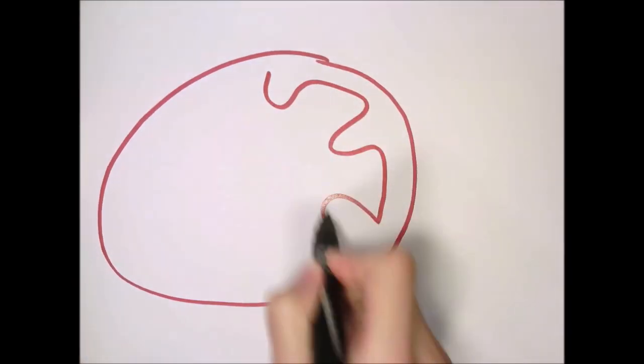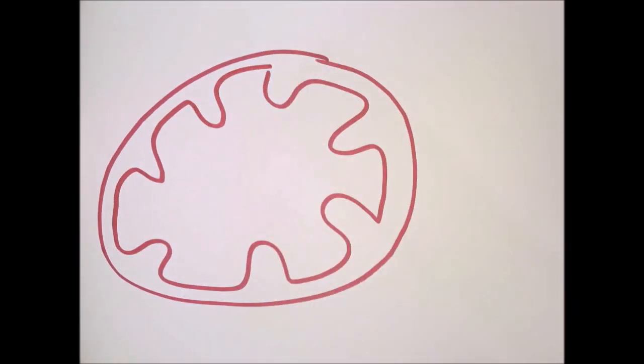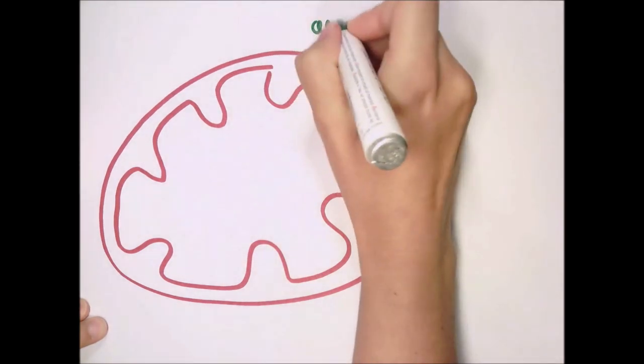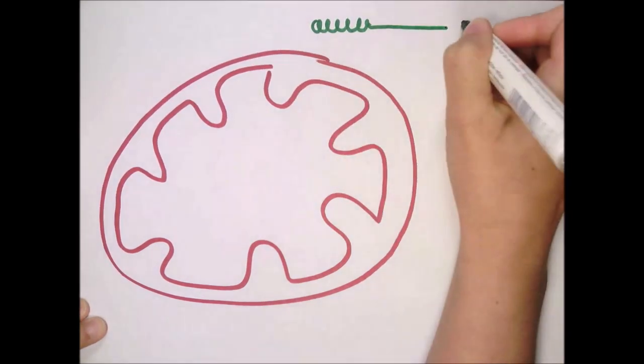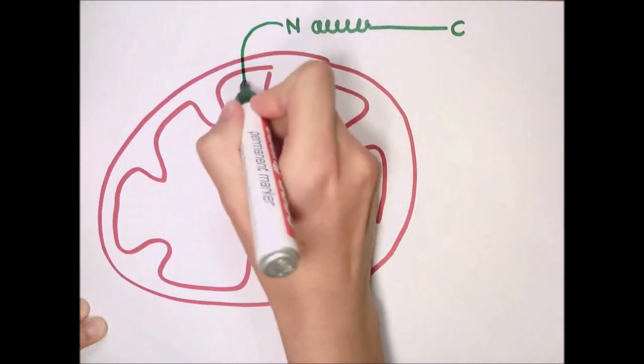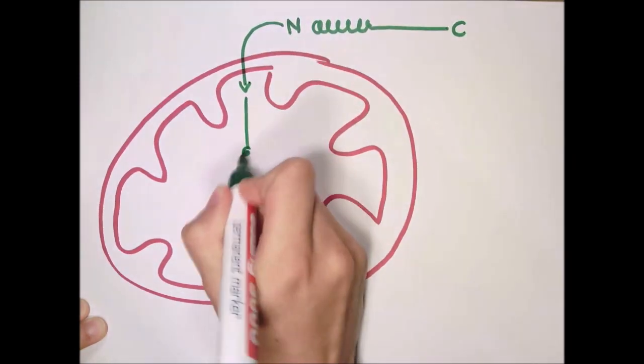Mitochondria are the powerhouses of our cell. Most of the around a thousand mitochondrial proteins are synthesized in the cytosol. They typically carry a pre-sequence at their N-terminus, which allows them to enter mitochondria across outer and inner membrane.